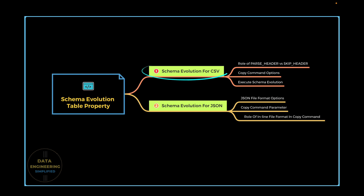In the first scenario, we will see how the schema evolution table property works for CSV data and what changes are needed when you define your table properties, file format properties, and copy command statement using a simple employee data entity. In the second scenario, we will see how the same property works for JSON data and what changes are needed to make sure schema evolution works as expected without any manual intervention.